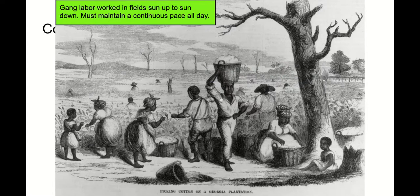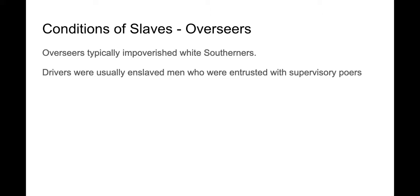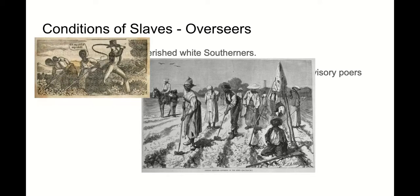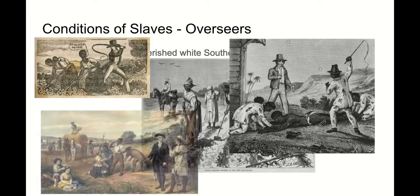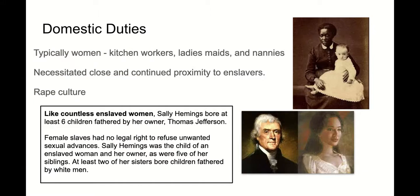Children would be taken out into the fields. Nursing mothers would tie their babies on their backs, and as soon as children could toddle, they were expected to be picking cotton as well. Overseers were typically impoverished white southerners who couldn't own large pieces of property. Drivers were usually enslaved men entrusted with supervising their peers — so both whites and blacks were forced to oversee slaves. Typically, women did domestic duties — kitchen work, ladies' maids, and nannies — which often necessitated close proximity, sometimes with bedrooms just off the kitchen or children's rooms so they could be available 24 hours a day.